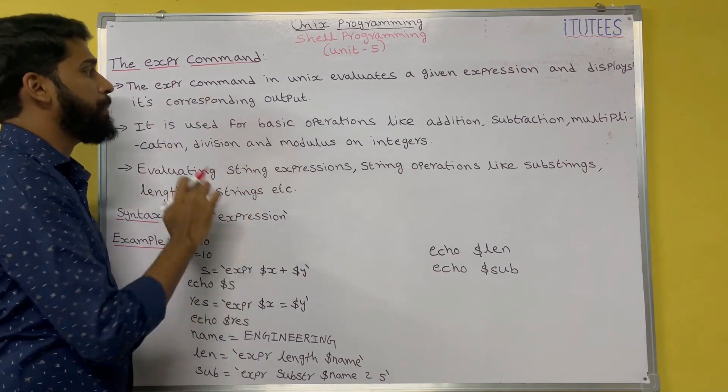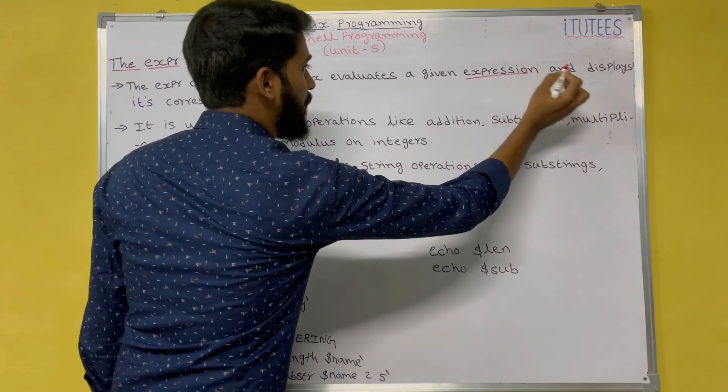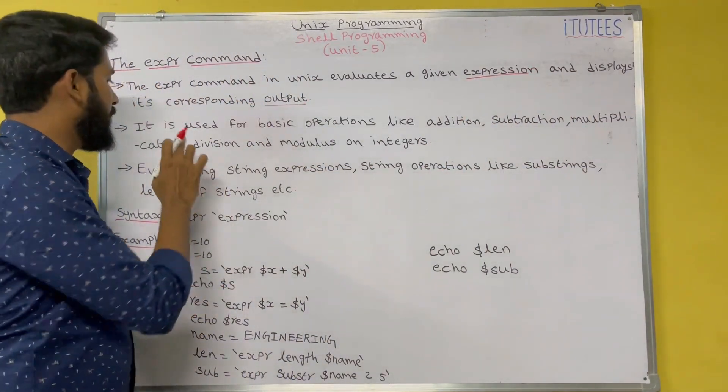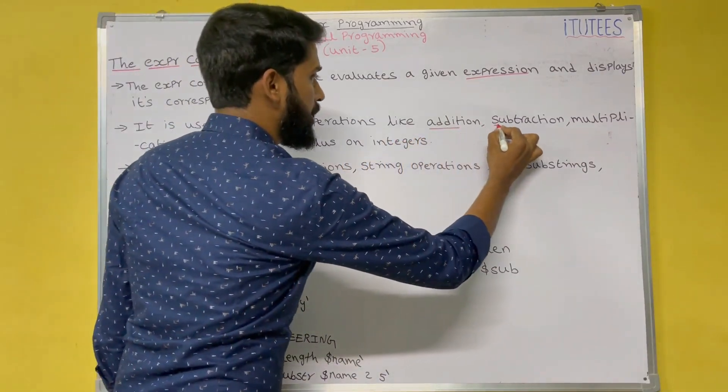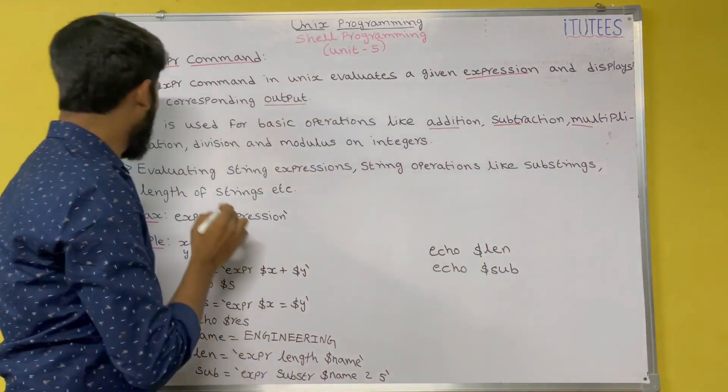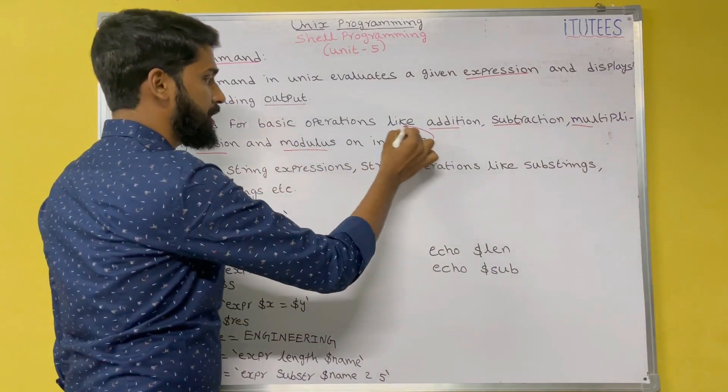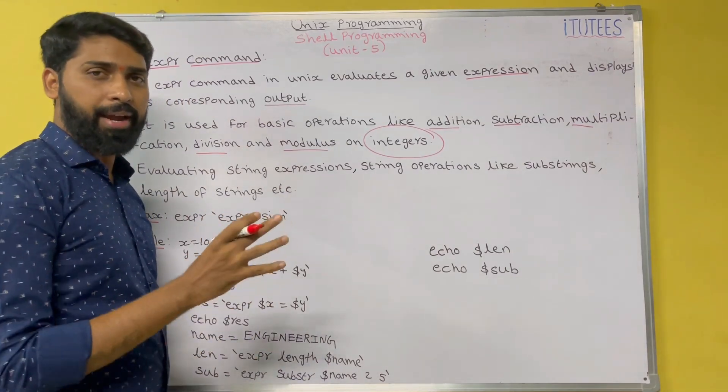The expr command in Unix evaluates a given expression and displays its corresponding output. It is used for basic operations like addition, subtraction, multiplication, division and modulus on integers only. We are going to perform arithmetic operations on integers only.